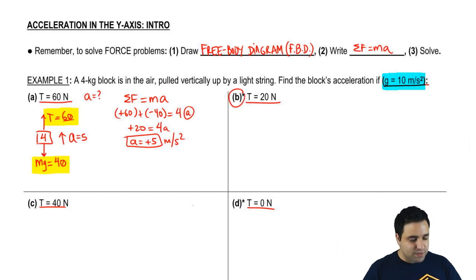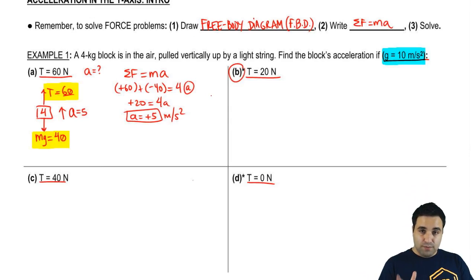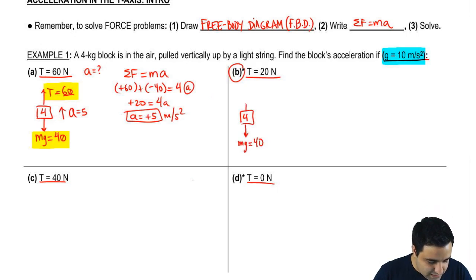Part B here is very similar, but the force is 20 instead. I want you to pause the video and give this a shot. It's a very similar setup. I'm going to keep going, but hopefully you paused it, and you tried it yourself to make sure you're following. So this is a 4. I got the same mg of 40, but this tension now is 20. At a quick glance, you can see that this force is actually the strongest force, so you should expect that your acceleration is going to be going down, which should be a negative.